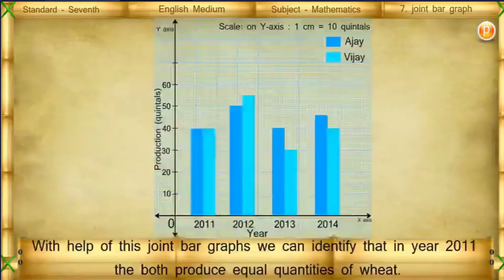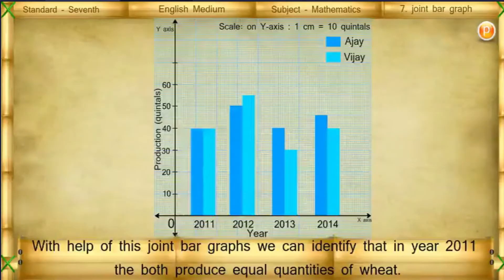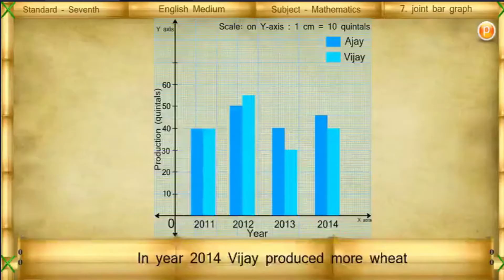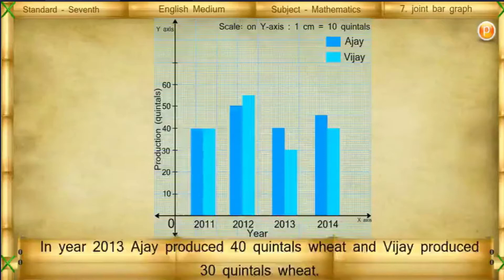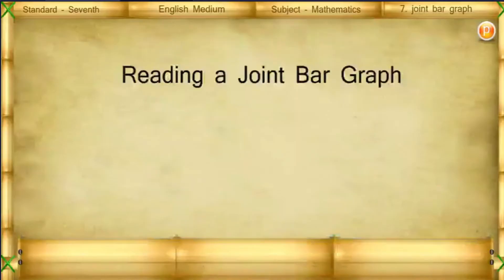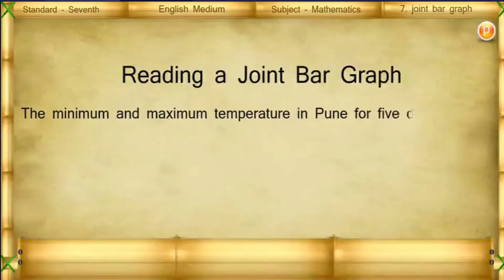Comparing Ajay and Vijay's wheat production also becomes easier. Such graphs are called joint bar graphs. With the help of this joint bar graph, we can identify that in year 2011 they both produced equal quantities of wheat, in year 2014 Vijay produced more wheat, and in year 2013 Ajay produced 40 quintals of wheat while Vijay produced 30 quintals.